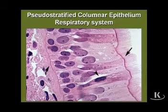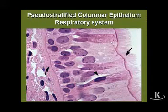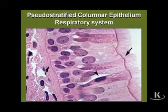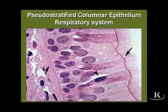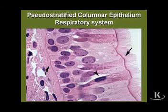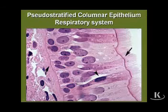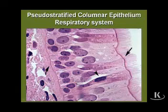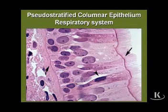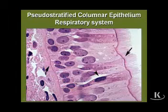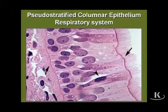Moving from simple epithelia to stratified, we first need to discuss pseudostratified columnar epithelium, which is highly characteristic of much of the respiratory system, including the trachea, bronchi, and in part the bronchioles. It is pseudostratified in the sense that all epithelial cells lie on the basement membrane — shown at the curved arrow — but only some actually reach the luminal surface. Basal cells lie only on the basement membrane and serve as the stem cells capable of regenerating the other cell types in this pseudostratified epithelium.